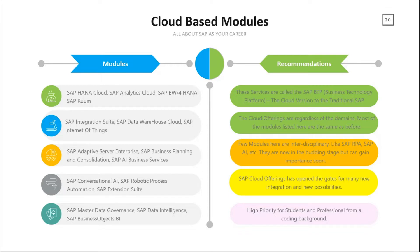I'm going to pinpoint certain modules which are evergreen. We'll be seeing this pattern in the top 10 trending modules in SAP. I would like to highlight SAP HANA Cloud, SAP Analytics Cloud, SAP S/4HANA, and SAP Room — these are some frequently heard topics in the cloud.